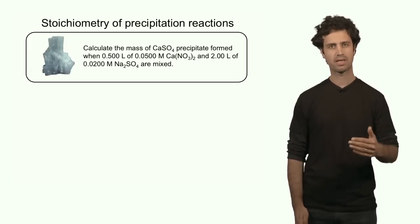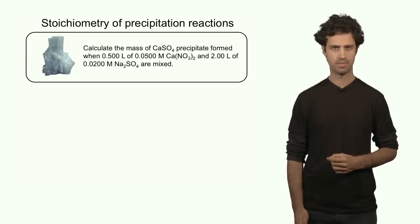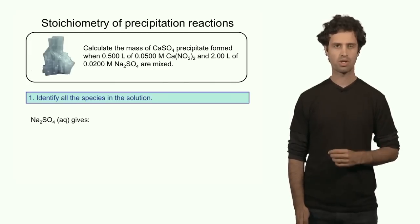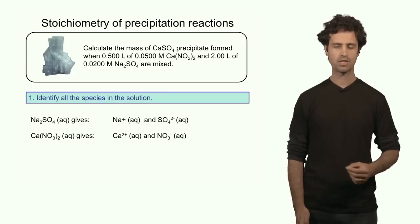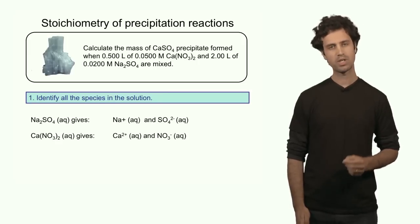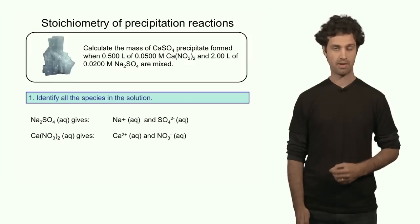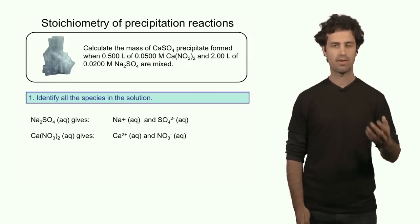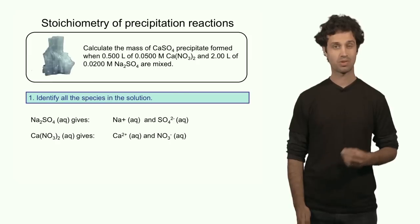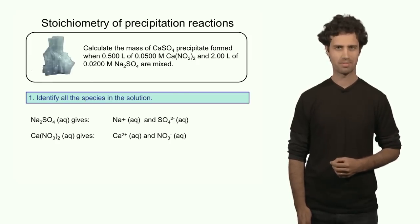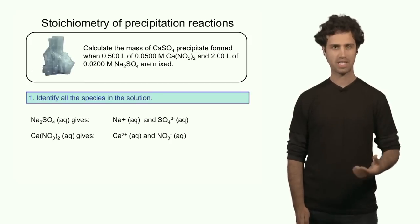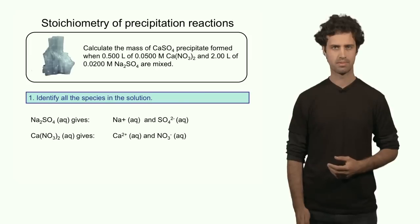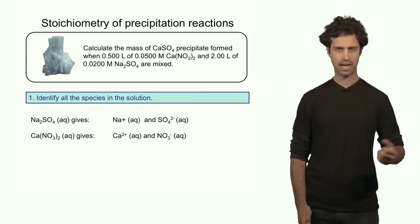The first step is to recognize which ions are present in solution. We know that sodium sulfate produces sodium and sulfate ions, and that calcium nitrate produces calcium and nitrate ions. The calcium and sulfate ions are the ones that interact to form the precipitate, while the sodium and nitrate ions are spectator ions, so we can leave them out.